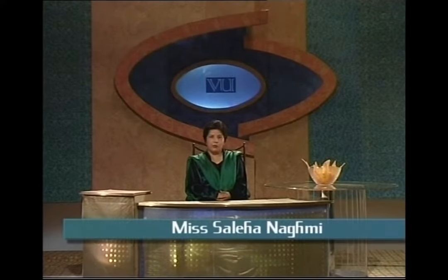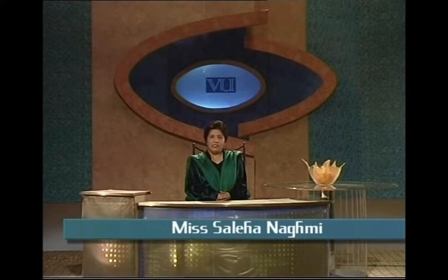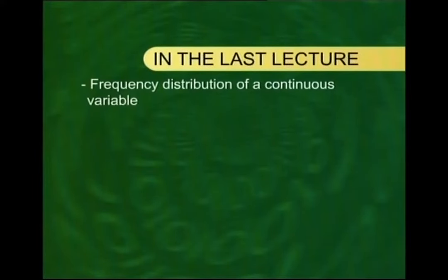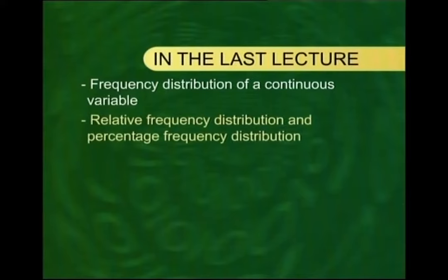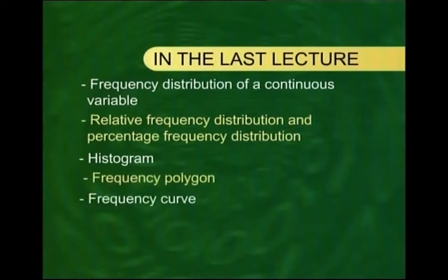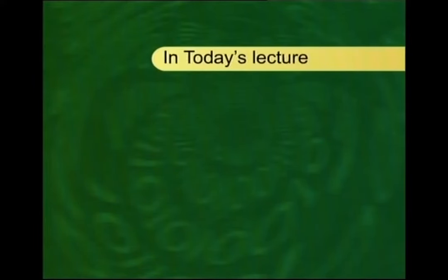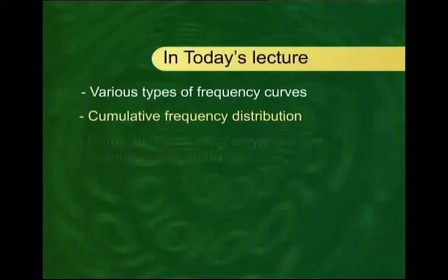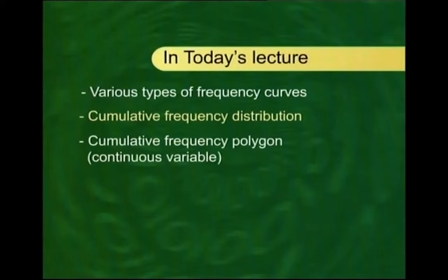As-salamu alaykum, welcome to lecture number five of the course on statistics and probability. In the last lecture, I discussed the construction of the frequency distribution of a continuous variable, the relative frequency distribution, and the percentage frequency distribution. We learned how to draw the histogram, the frequency polygon, and the frequency curve, and then we covered the cumulative frequency distribution and the cumulative frequency polygon.